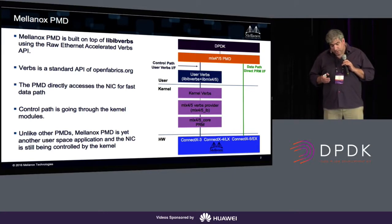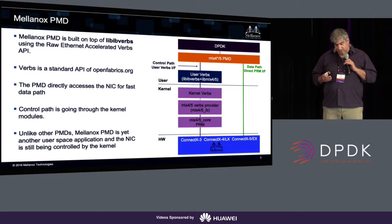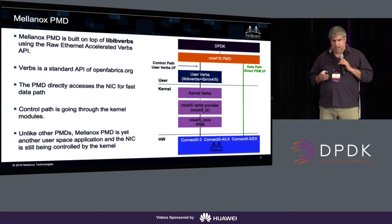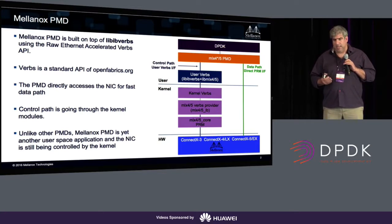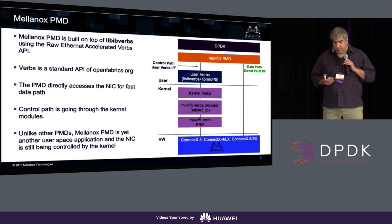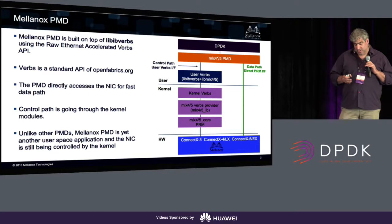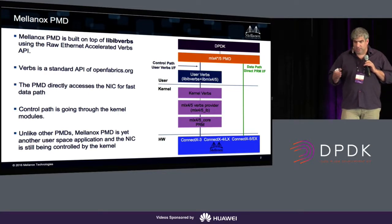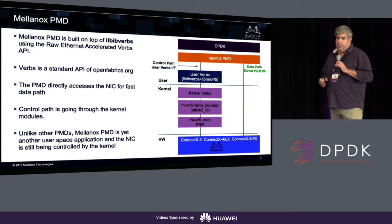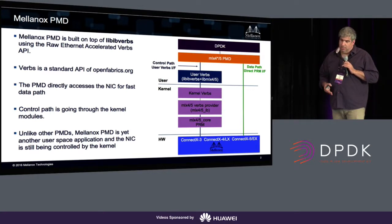So the PMD directly accesses the NIC for all the data path — things like sending a packet, posting a packet, receiving packets — but all the control path, such as creating rings, controlling the MTU and all those kinds of things, is done through the kernel.